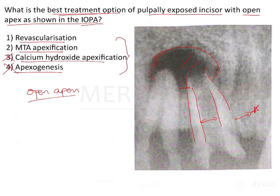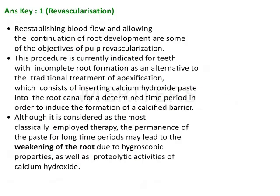So we are left between revascularization and MTA apexification. We need to understand what we want to achieve — they have asked for the best treatment plan. The most ideal outcome is that the tooth can be saved and the vitality of the tooth can be restored. That can only be achieved by revascularization, whose objective is re-establishment of blood flow and continued root development, so once vitality is restored, root development will continue.